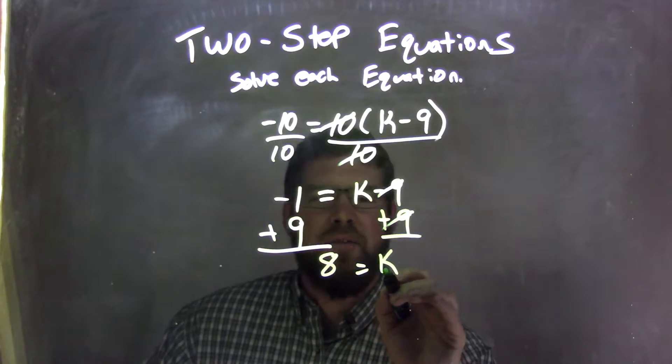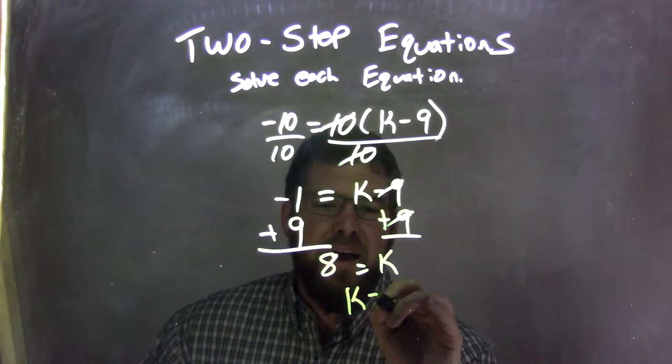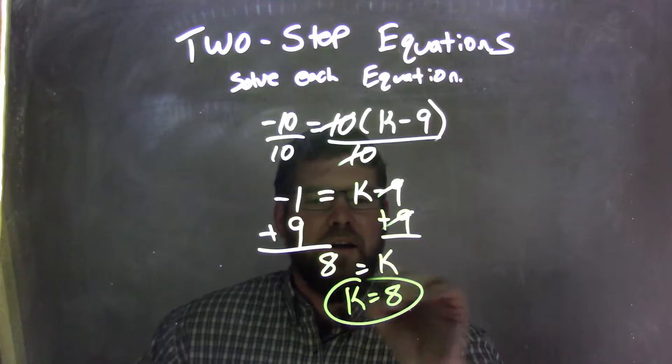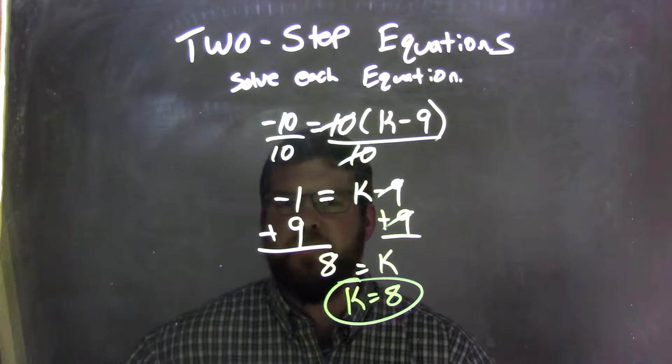Well, 8 equals k. So we rearrange this to make it look nicer: k equals positive 8, and there we go. We have our final answer.